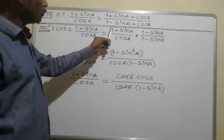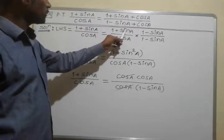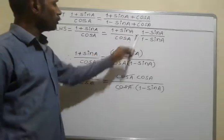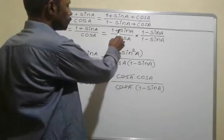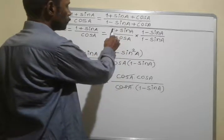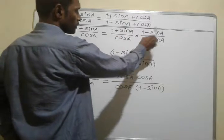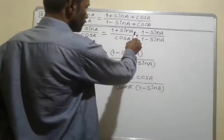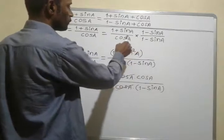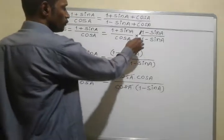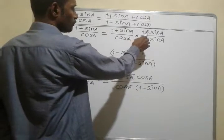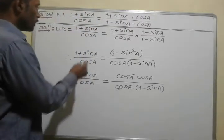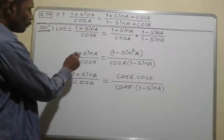I will write (1 + sinA) / cosA, and I will take the conjugate pair of this — that is (1 − sinA) / (1 − sinA) — and multiply this term by (1 − sinA) / (1 − sinA).